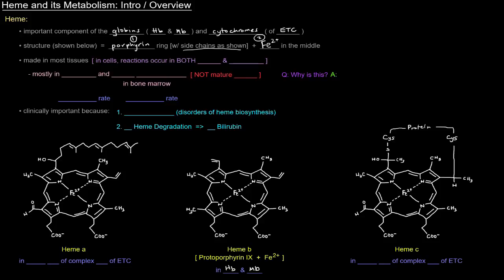We have heme a and heme c here also just to show you different structures. Heme a, for example, is in cytochrome a of complex four of the electron transport chain, and heme c is in cytochrome c of complex three of the electron transport chain. You can see how they have these different side chains that make them unique as far as heme goes.